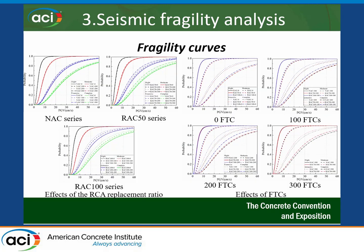The fragility curves were developed using PGV as the intensity measure. Results show curves for the natural aggregate series, recycled aggregate at 50% replacement level with no freeze-thaw cycle, 100 freeze-thaw cycles, and recycled aggregate concrete at 100% replacement with 100, 200, and 300 freeze-thaw cycles. The fragility of the 50% RCA mix is very close to natural aggregate concrete, but at 100% replacement, vulnerability increases slightly. As the number of freeze-thaw cycles increases, the probability of damage also increases across all damage states.